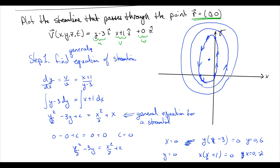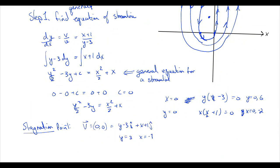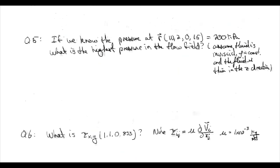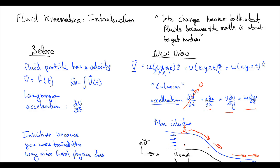Streamlines are super useful for visualizing how a flow behaves. In computational fluid dynamics results, streamlines are often shown flowing around objects. If those streamlines are twisting and turning with time, the flow is time-evolving and not steady state. That's our introduction to fluid kinematics.